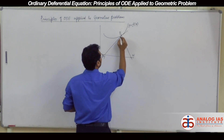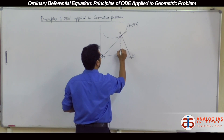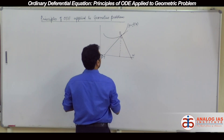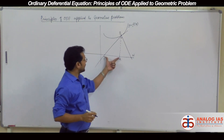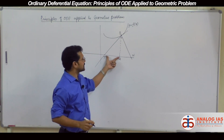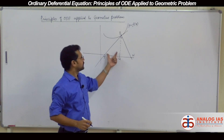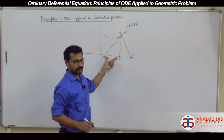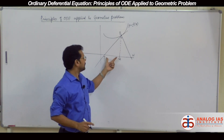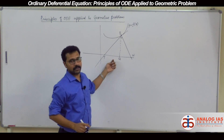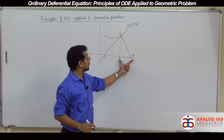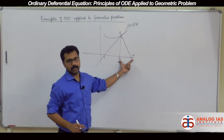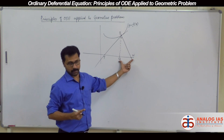Now, suppose if I drop this point here onto the x-axis — suppose it is Q — then this length TQ is called subtangent. This is the tangent, this is the subtangent, and the length QN is called subnormal.